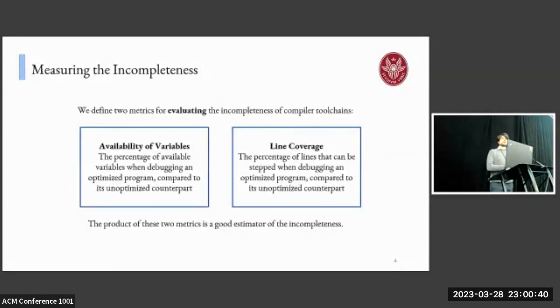We started by conducting preliminary studies to evaluate the incompleteness of debug information in the most commonly used compiler tool chains. We define two metrics: the availability of variables, which is the percentage of variables available when debugging an optimized program compared to its unoptimized counterpart, and the line coverage, which is the percentage of lines that can be stepped when debugging an optimized program again compared to its unoptimized counterpart. We compute these metrics dynamically and define their product as a good estimator of the incompleteness.